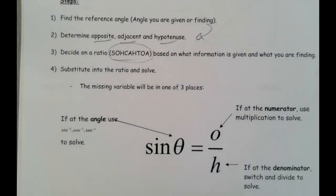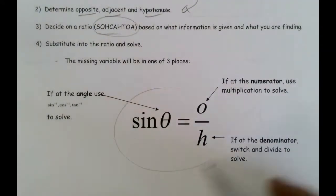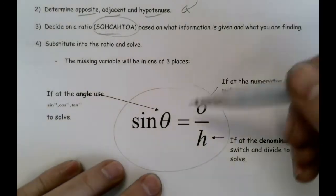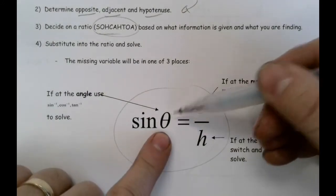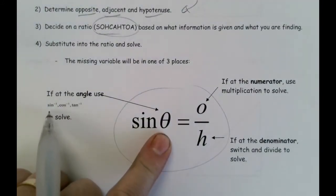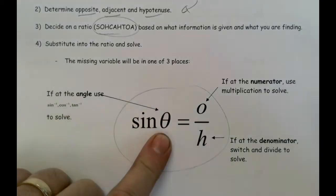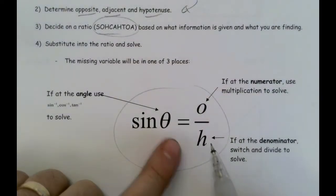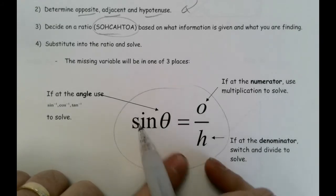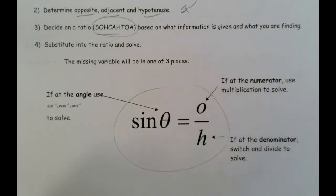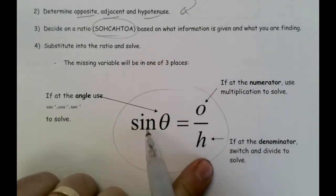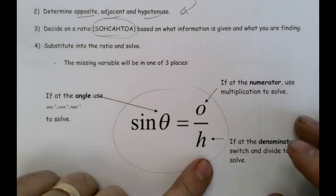When you've got a trig ratio, it doesn't matter whether it's sine, cosine, or tangent. There are three things you might be looking for. You might be looking for the angle — in which case you'll need to use the inverse sine, inverse cosine, or inverse tangent. You might be looking for the numerator, in which case you multiply the denominator up by the trig function to get the answer. Or you might be looking for the denominator — you can swap those two, then do the division to get the missing piece.